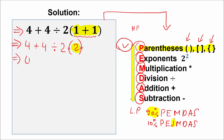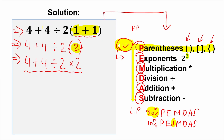So we get rid of the parentheses: 4 plus 4 divided by 2 times 2. We complete the parentheses part. Now let's go to the next step: exponents. We need to find where we have powers — like squares or cubes. Let's scan. This expression doesn't have exponents, so we can actually skip this step. We can note that we don't have exponents in our question.